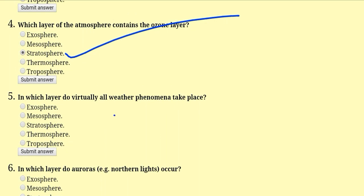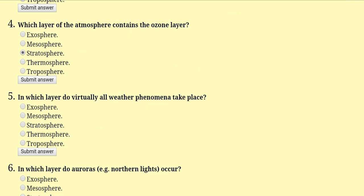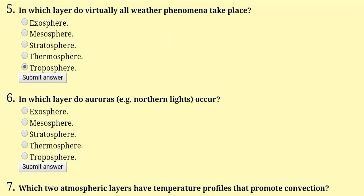In which layer do virtually all weather phenomena take place? It is the troposphere. This is because the troposphere is closest to Earth, it can collect water from Earth by evaporation, it is the most dense layer, and the right temperature is present for movement of molecules. So all weather phenomena happen in the troposphere layer. The correct answer is troposphere.